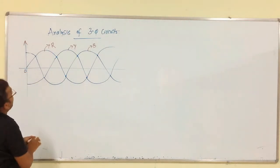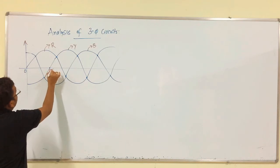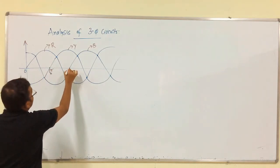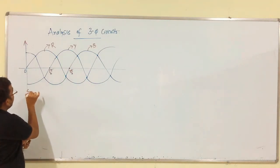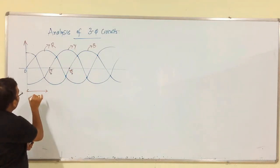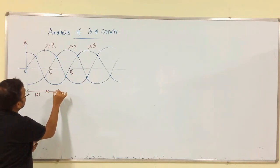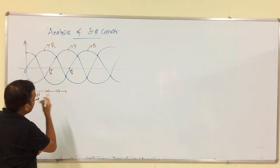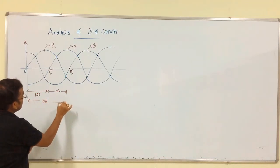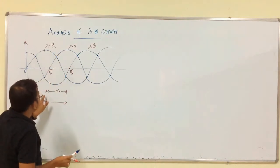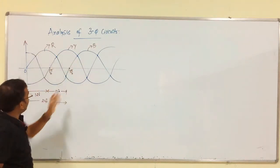This is 0 degrees, this is 120 degrees that is 2π/3, and this is 4π/3. Between any two phases, we have 120 degrees phase displacement. From R to Y we have 120 degrees, from Y to B we have 120 degrees, from R to B we have 240 degrees.